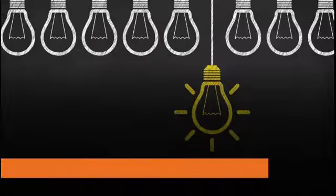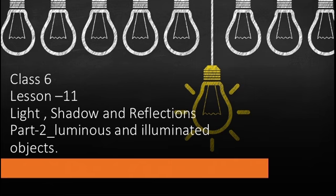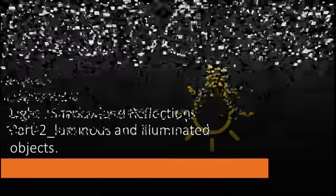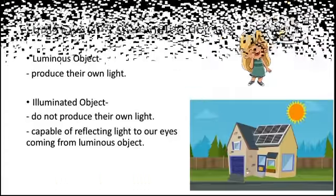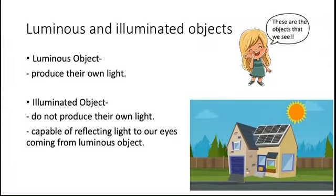Hello dear students, let us continue with the chapter Light, Shadow and Reflections. When we talk about the different types and sources of light, it becomes very important to know that not all objects produce light. Based on whether an object can produce light or not, objects are classified into two categories: luminous and illuminated objects.